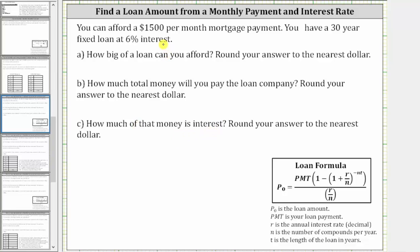We will answer this question using the loan formula shown below, where P₀ is the loan amount, PMT is the loan payment, r is the annual interest rate as a decimal, n is the number of compounds per year (which if not given, we will use the frequency of the payments), and t is the length of the loan in years.